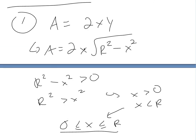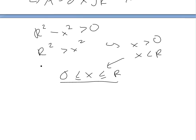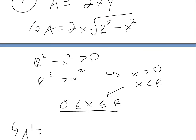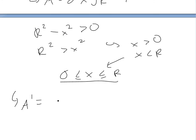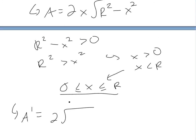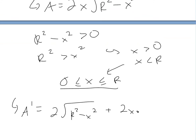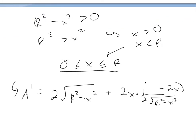Like always with these examples, we need to find the critical point by setting the derivative equal to zero. Taking the derivative with respect to x requires the product rule. We get 2 times √(r² − x²) times the derivative of x, plus 2x times (1/2) times 1/√(r² − x²), and then applying chain rule, times negative 2x.